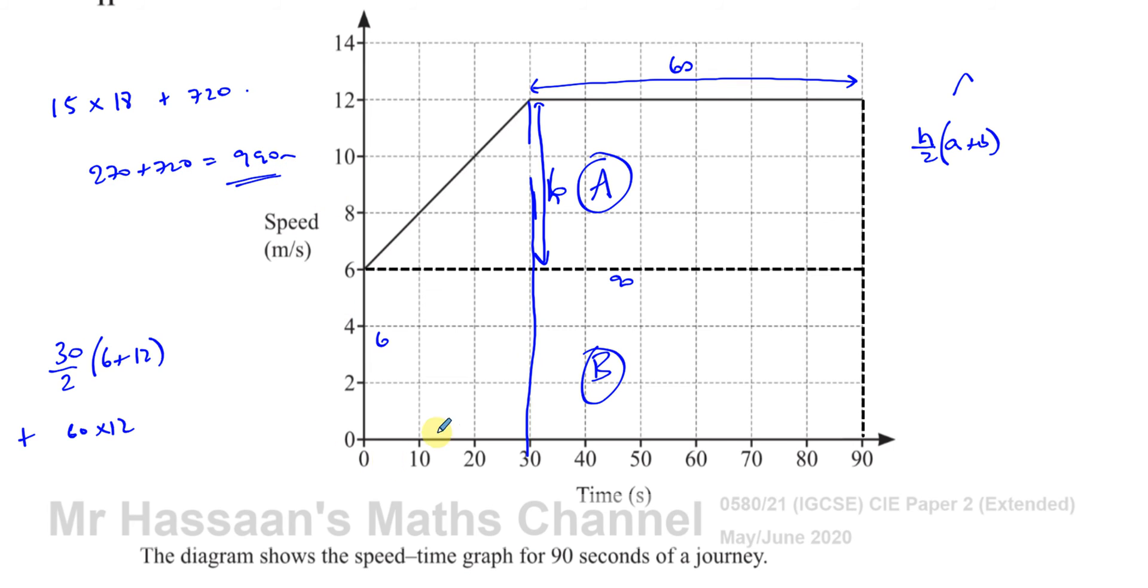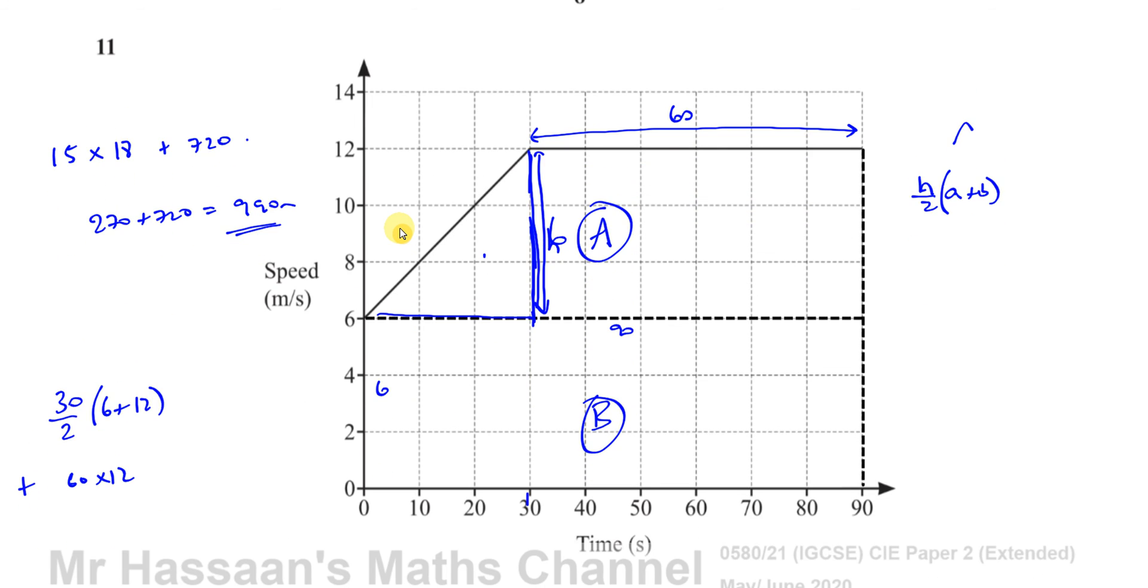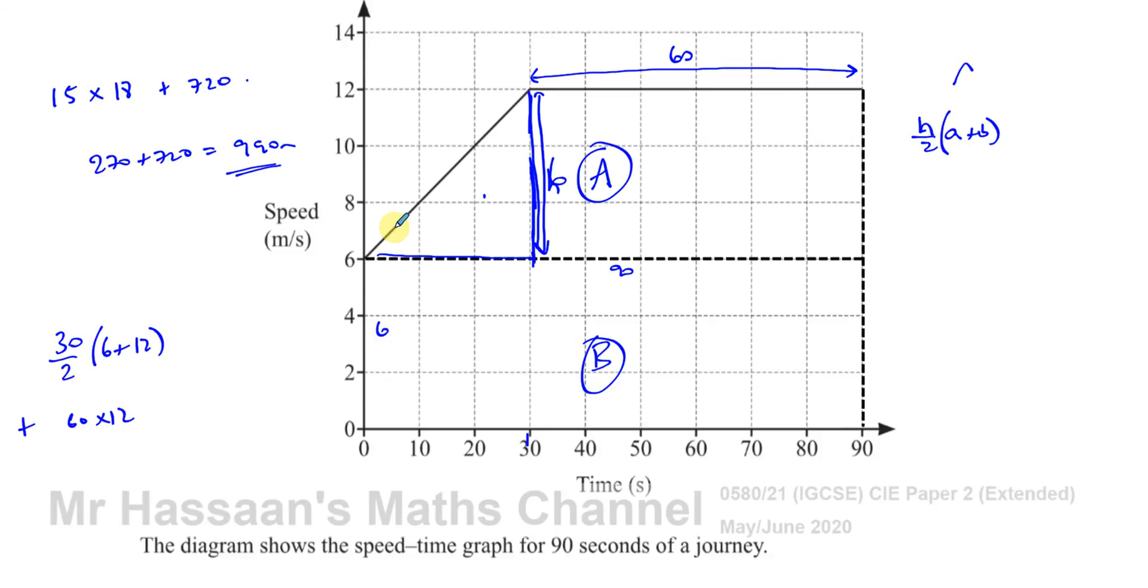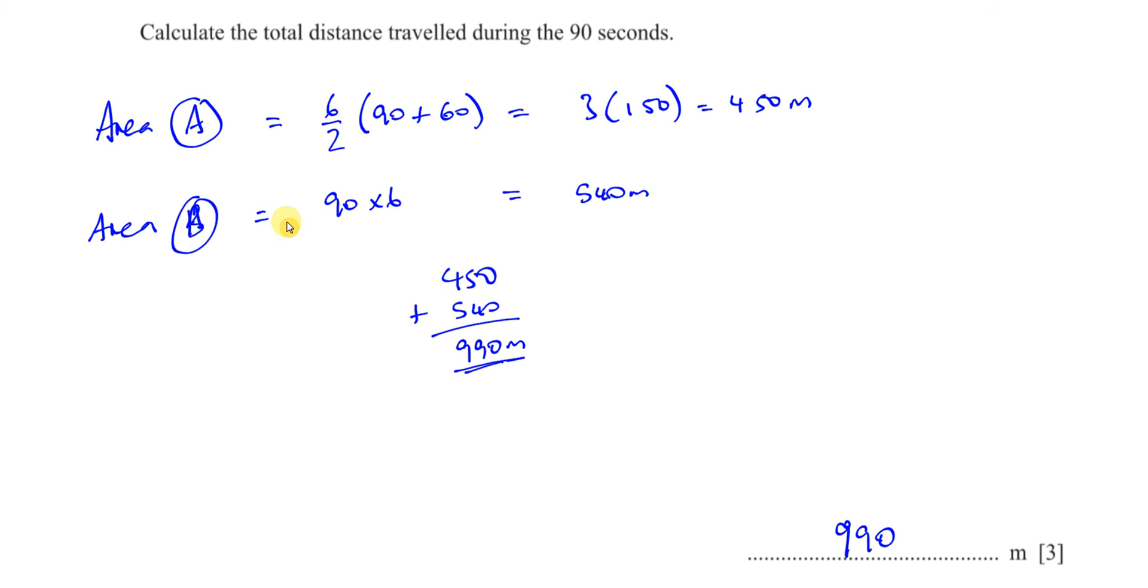So you could have done the same thing by splitting it this way into a trapezium here and a rectangle there. Some people don't like trapeziums, so they might split this further into two rectangles and a triangle. It will still work. But I think it's good to get used to the area of a trapezium. Whichever way you choose to do it, as long as you end up with the right answer in the right way, you're fine.